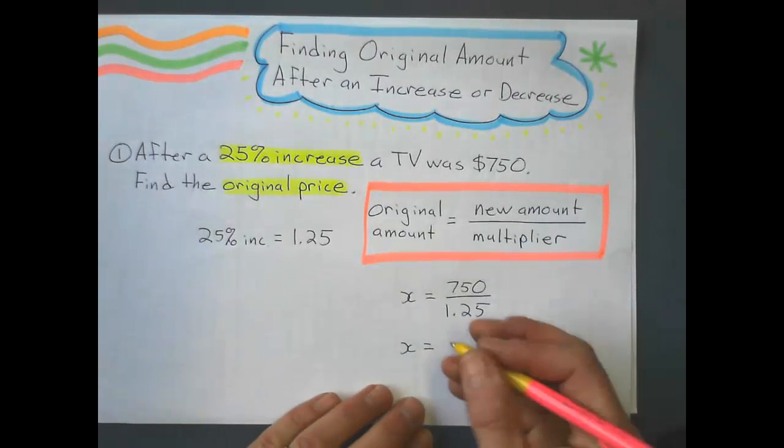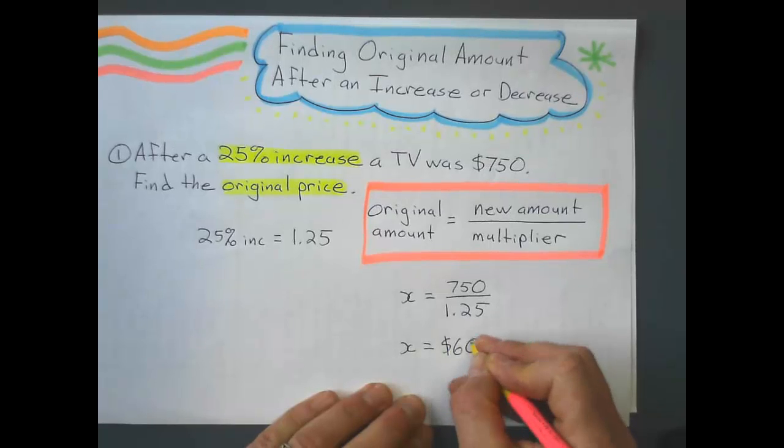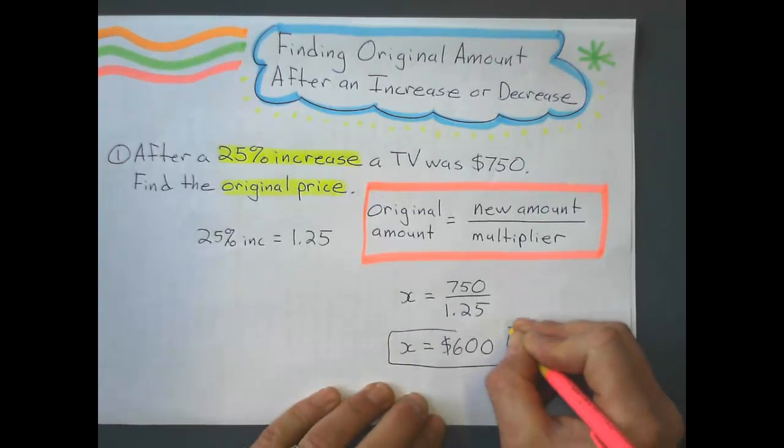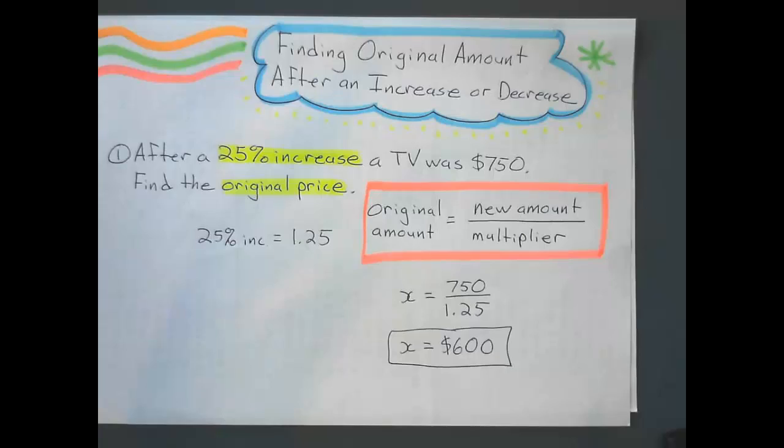And after that, I get $600 was my original cost, original price. So we've, hopefully we've done this already, and this is the fewest steps we can write to get my original amount here.